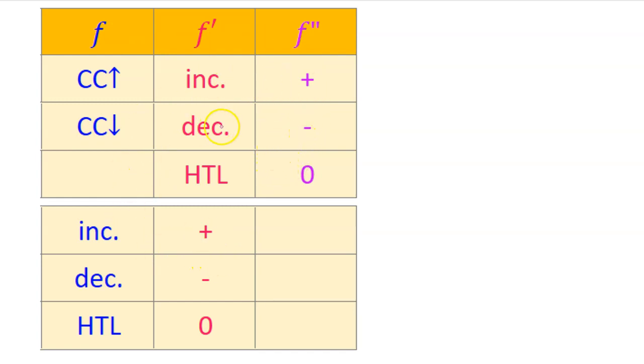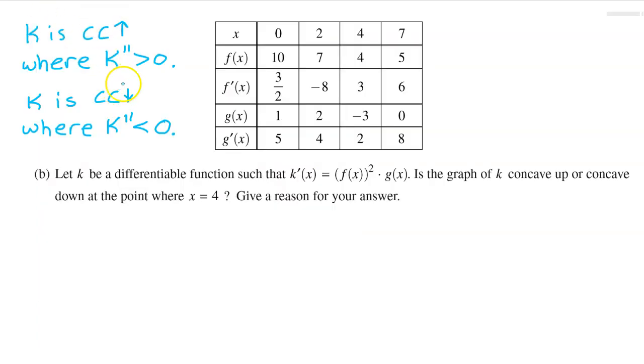In fact, I recommend that you draw this chart either on a piece of scratch paper or in the margin before you take every test or quiz. So the original function will be concave up if the second derivative is positive and concave down if the second derivative is negative. So our strategy will be to find an expression for k double prime and then evaluate it at x equals 4. If k double prime is positive, then k is concave up. If k double prime is negative, then k is concave down.